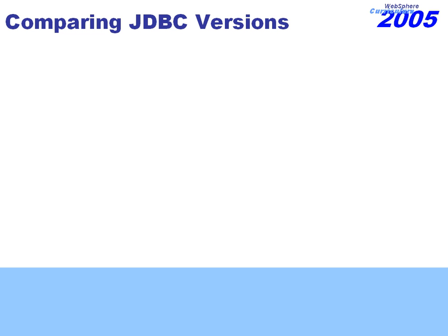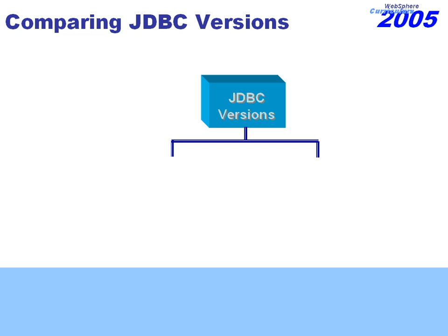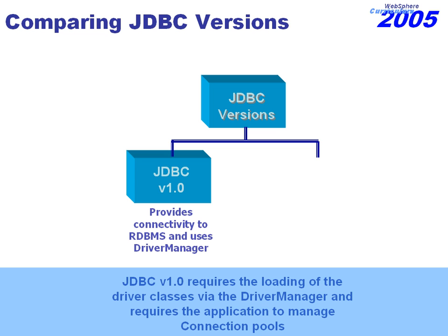There are different versions of JDBC that currently exist in our architectures today, so we want to talk about some of the differences between these different JDBC variations. First, looking at version 1.x — the first initial aspects of working with databases were provided through this variation. Its job was basically to create access to drivers through a particular API called the Driver Manager.